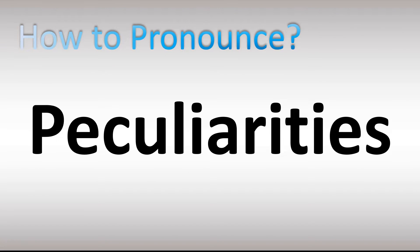We are looking at how to pronounce this word. Let's break down the different pronunciations in British English in the UK. It's usually said as 'peculiarities' — pe-cu-li-e-ra-tees — stressed on the fourth syllable. Peculiarities.